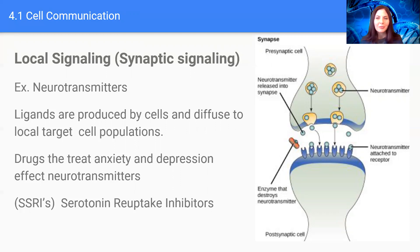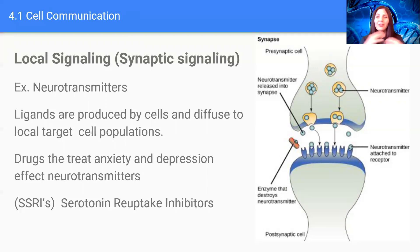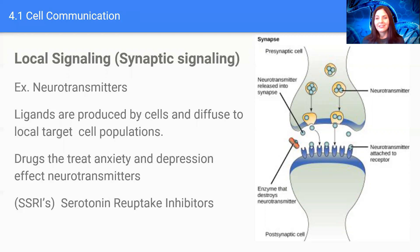A class of drugs called SSRIs, or serotonin reuptake inhibitors, actually prevent neurotransmitters from being transmitted from one neuron and received by the receiving protein on the next. Many medications work by interacting with different types of neurotransmitters and preventing different types of messages from being sent. This is a huge industry, and research goes into cell signaling and how different molecules affect those pathways in treating diseases such as cancer.